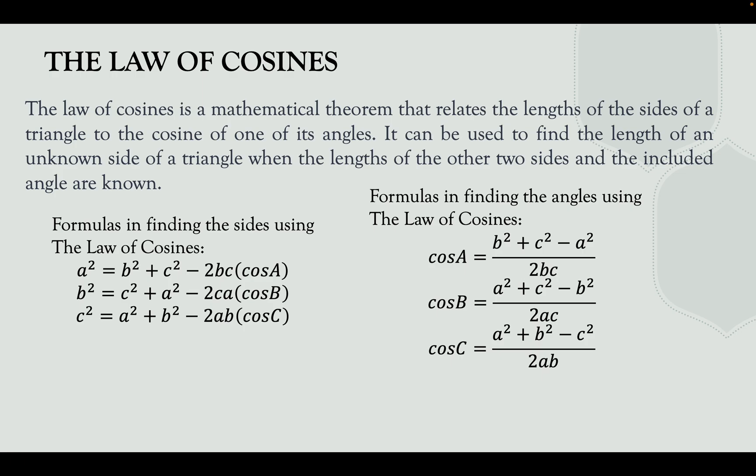The Law of Cosines is derived from the Pythagorean theorem: c² = a² + b². In finding the sides using the Law of Cosines: to find side a, use a² = b² + c² − 2bc·cos A; to find side b, use b² = c² + a² − 2ca·cos B; to find side c, use c² = a² + b² − 2ab·cos C.